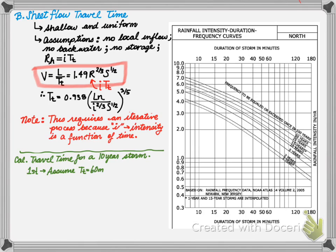The following graphic explains what I'm talking about. As you can see, you have storm duration on the x-axis, you have rainfall intensity on the y-axis, and you have various frequency storms. In order to calculate the travel time using the sheet flow method, we need to first assume a travel time or a duration of our storm.